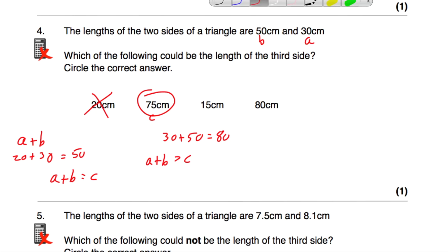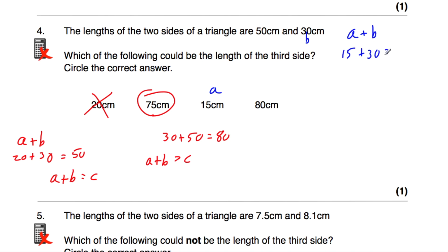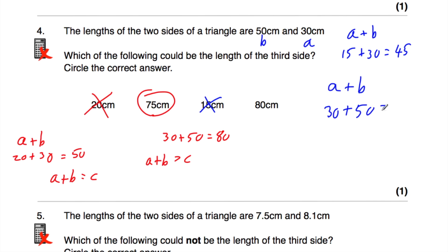For 15cm: the two shorter sides would be 15 and 30, so A plus B equals 15 plus 30, which is 45. That's less than the longest side of 50, so that can't exist. For 80cm: the two shorter sides are 30 and 50, so A plus B equals 30 plus 50, which is 80 — the same as C. That can't exist either. The only option that works is 75cm.